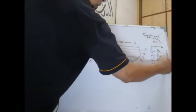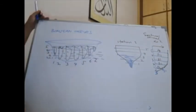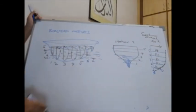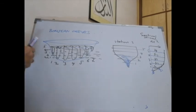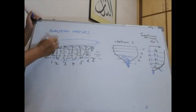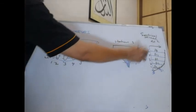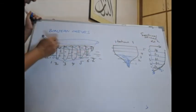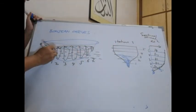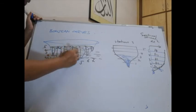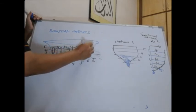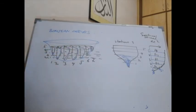If we connect the points, we can get a curve. That curve is a Bonjean curve — in this case, for station 3. Of course, now we do this for every station: station 1, station 2, station 3, and so on. So we get the Bonjean curves for all the stations.